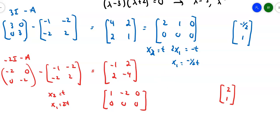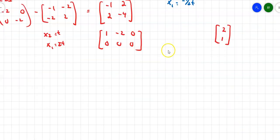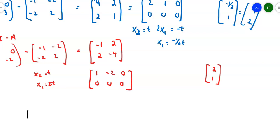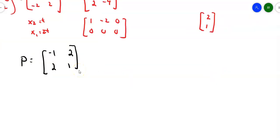Setting up matrix P from those eigenvectors: P = [[-1, 2], [2, 1]]. We started with a symmetric matrix, and taking the dot product of the two eigenvectors [-1, 2] and [2, 1] gives -2 plus 2, which is zero. It's not an accident — if you have a symmetric matrix, the eigenvectors are always orthogonal to each other. We'll do the full orthogonal diagonalization process in a separate video.